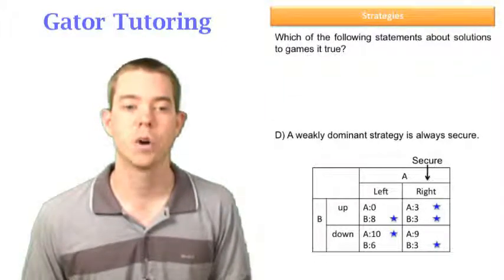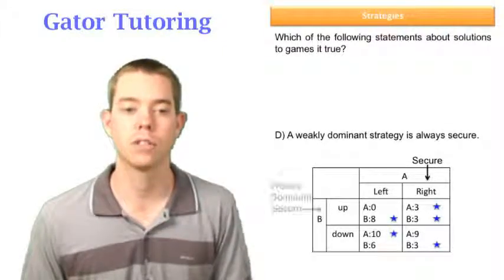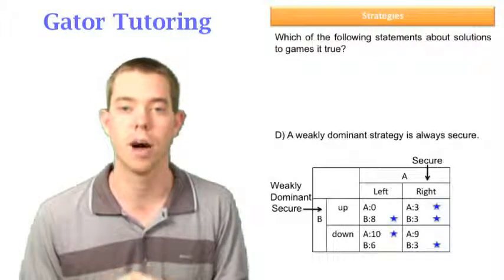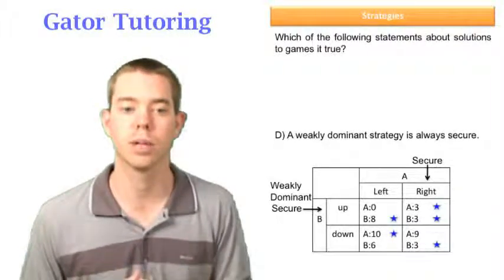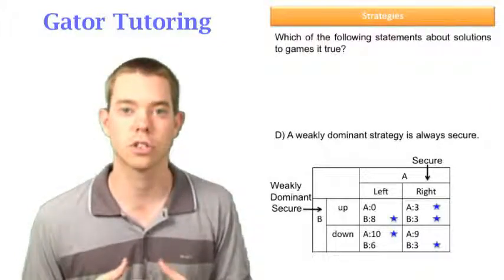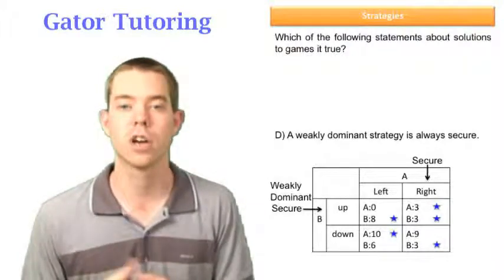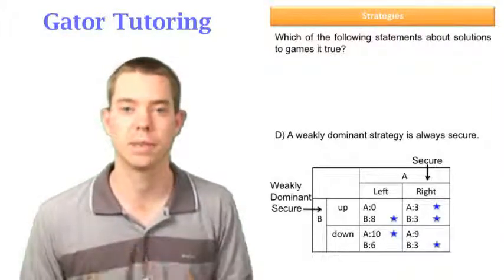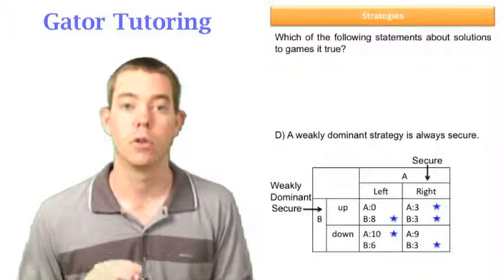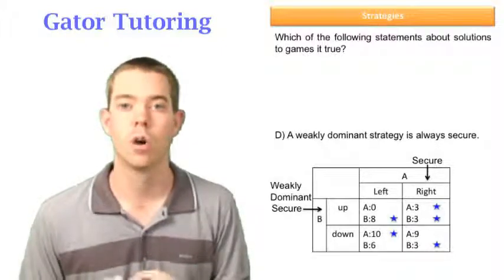Option D says a weakly dominant strategy is always secure. B has a weakly dominant strategy — he always plays up, with payoffs of 8 and 3 compared to 6 and 3. Eight is definitely better than 6, and 3 is at least as good as 3, so up is weakly dominant. A strongly dominant strategy would require both payoffs to be strictly better. By definition, both weakly dominant and strongly dominant strategies are always secure strategies. However, a secure strategy will not always be weakly or strongly dominant.